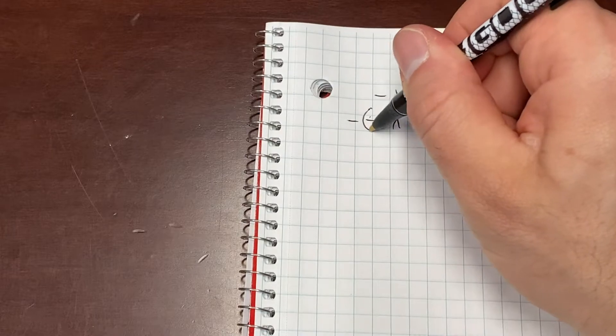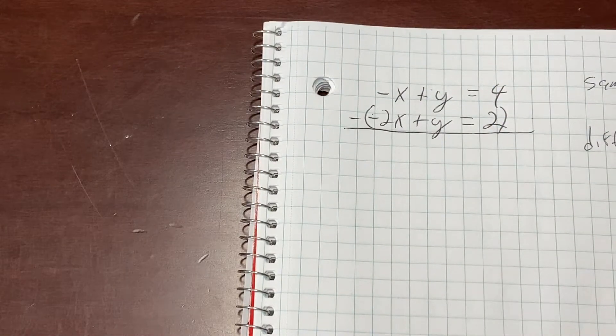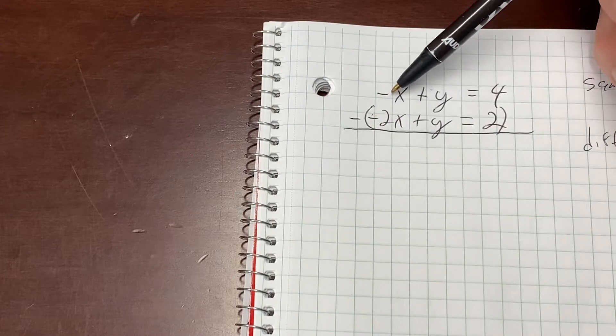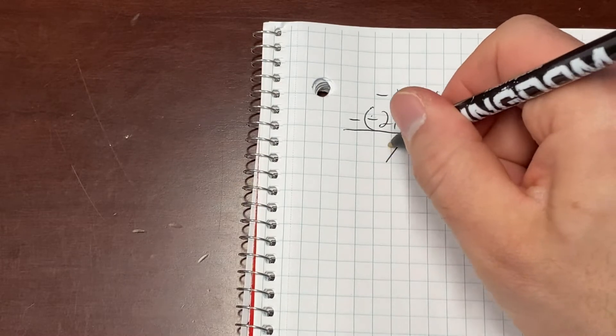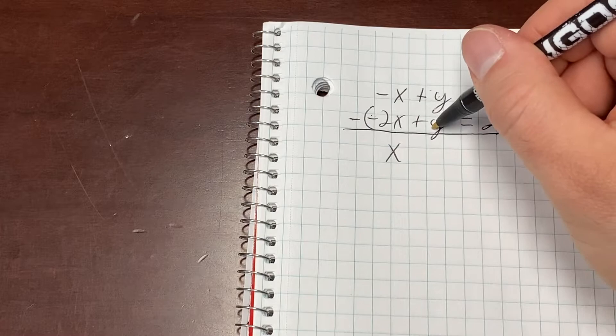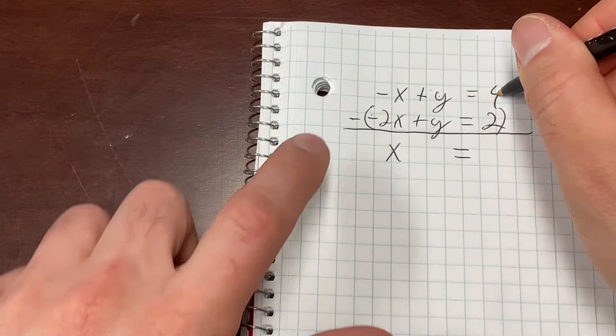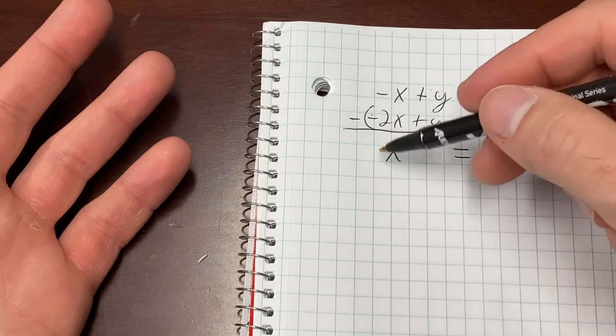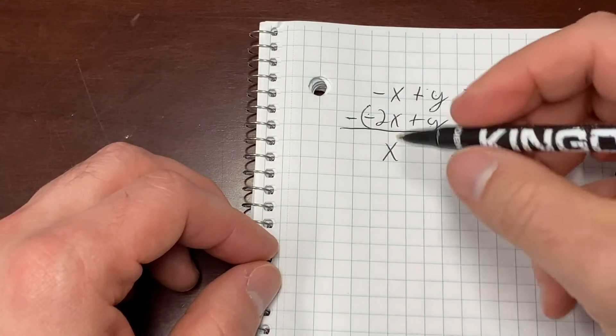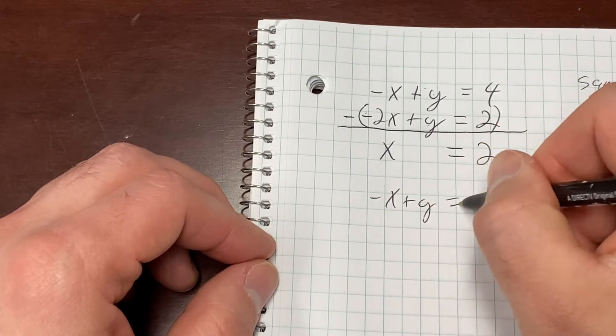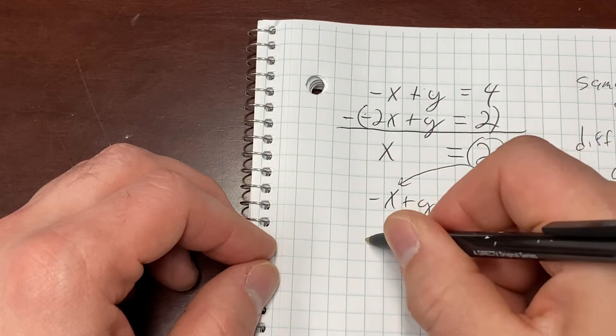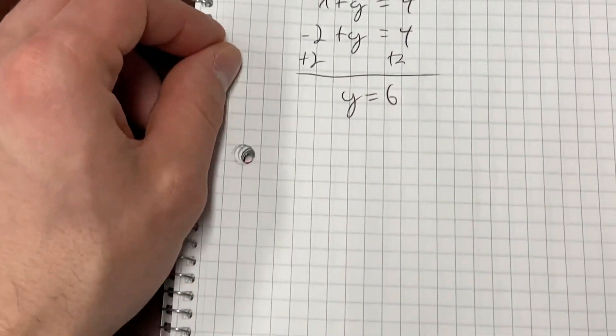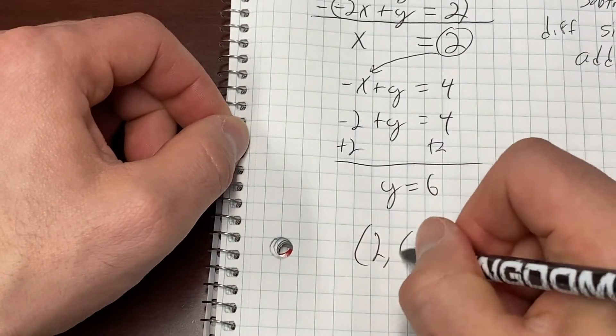We are going to subtract. I always like to use my parentheses. Now watch your signs here. Negative 1 minus negative 2 - when you subtract a negative, you are adding. So this is negative 1 plus 2, which is positive 1X. Y minus Y eliminates. That's why we did it. 4 minus 2 is 2. And hey, wouldn't you look at that? We're done. X equals 2. We don't have to do any division step because we got a 1. Now let's rewrite one. Negative X plus Y equals 4. Take what we just found. Put it in right there. Negative 2 plus Y equals 4. Add that 2 over. Y equals 6. Final answer, (2, 6).